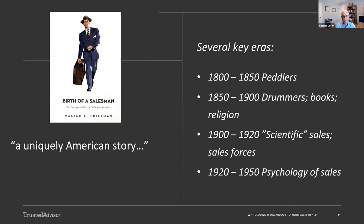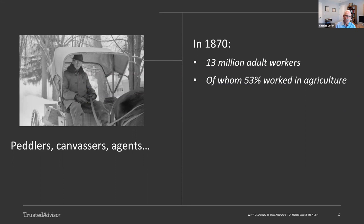To put some context here, go back to 1870. At that time in the United States there were 13 million adult workers and more than half of them worked in agriculture. Basically farmers. It was a nation of farmers at that point and that was only 150 years ago.